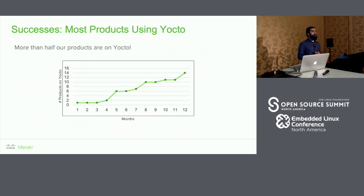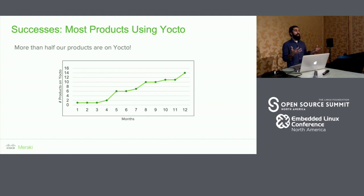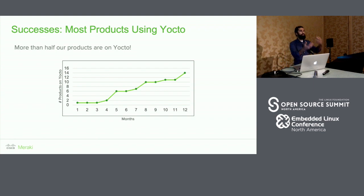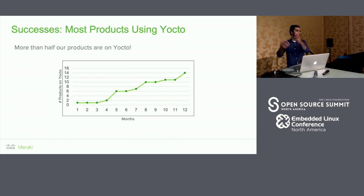Most of our products are also now on Yocto. You might notice step-jump increases in the number of products ported. That's because the first product in a class — say wireless access points — takes a long time to port since you have to test and think through all the bases. But the subsequent products in that class are very similar, so the next few only take about a week to port two or three at a time. If you're porting, the first one will be difficult, but the ones after will sort of come for free.